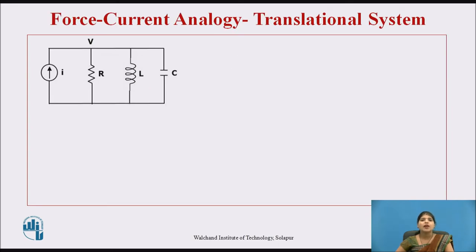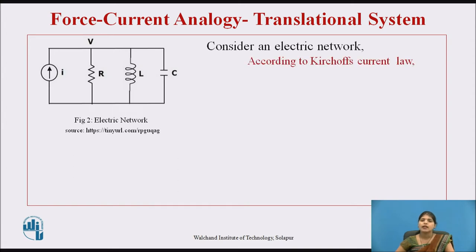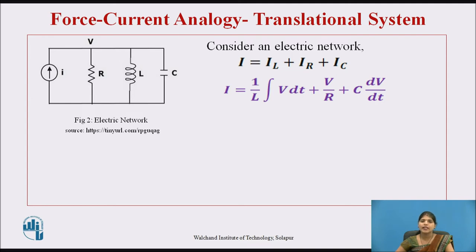Now we will derive the analogous electrical network. Consider the electric network shown in figure two, where R, L, and C are connected in parallel. In this method, force F is assumed analogous to current I. According to Kirchhoff's current law: I = I_L + I_R + I_C, which in terms of voltage gives: I = (1/L)∫V dt + V/R + C·dV/dt.